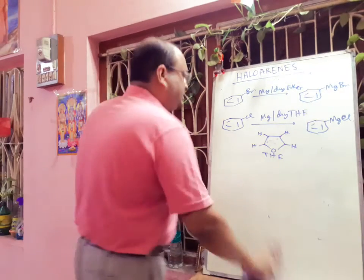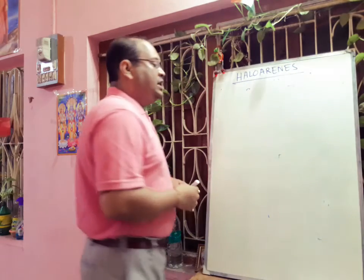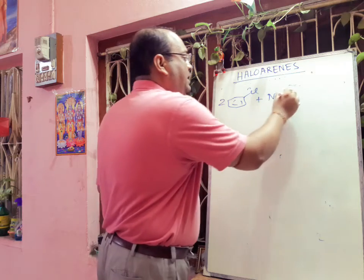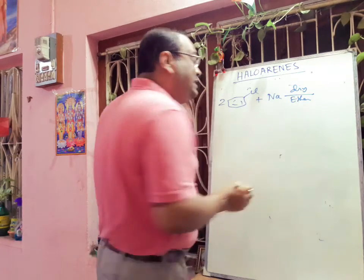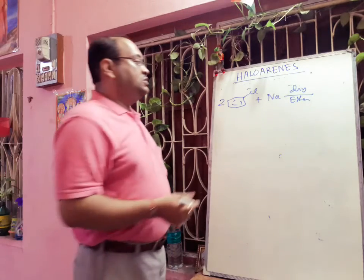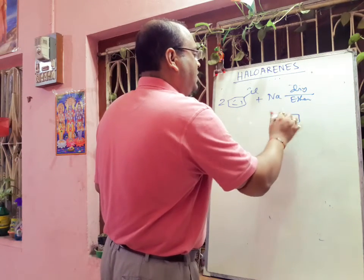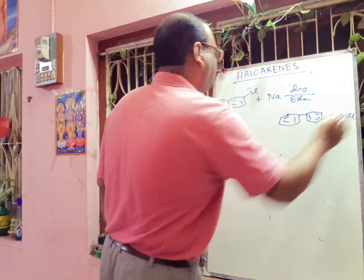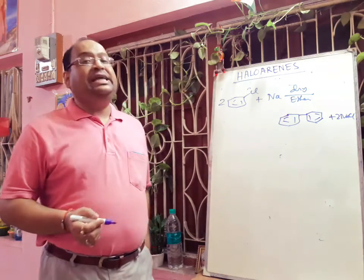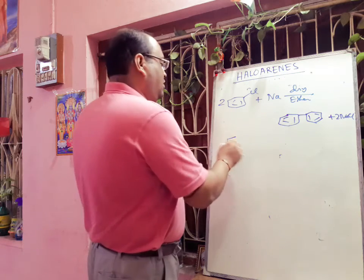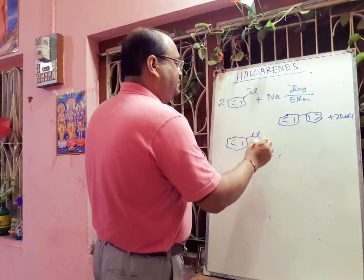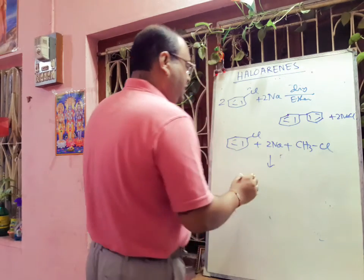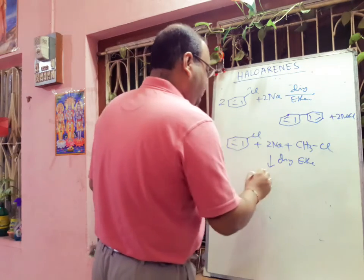Next, the Fittig reaction: two aryl halides react in the presence of sodium and dry ether to give biphenyl as the product, along with two equivalents of sodium halide. This is a modification of the Wurtz reaction. If instead we take one aryl halide like chlorobenzene and one alkyl halide like methyl iodide, with sodium we get toluene — this is called the Wurtz-Fittig reaction.